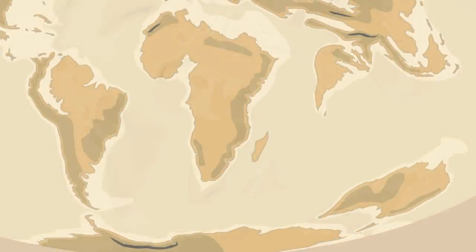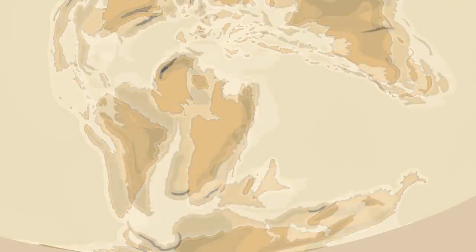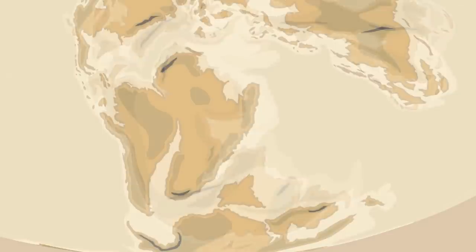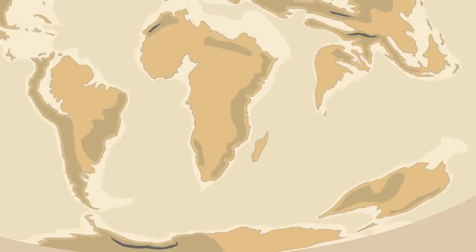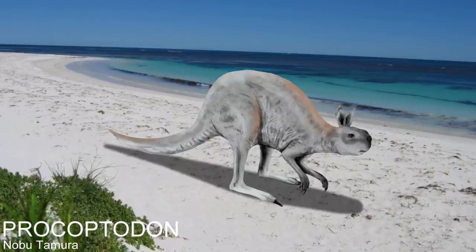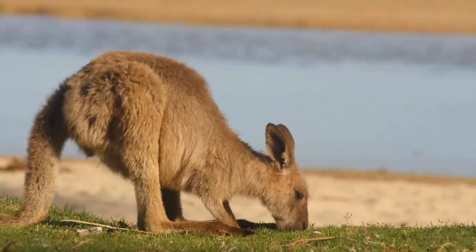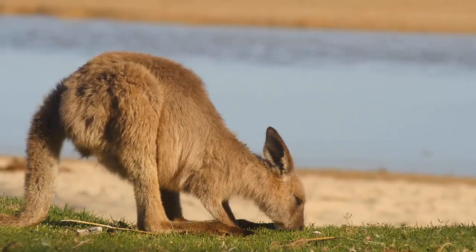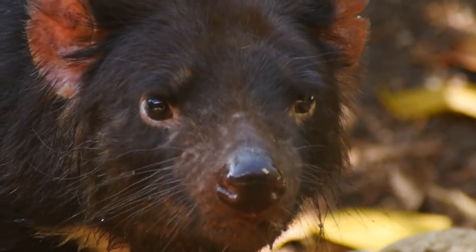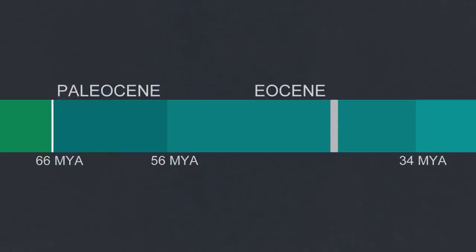Once upon a time, all of these continents made up a large southern continent named Gondwana. Although after the extinction of the dinosaurs this continent had long since broken apart, all of the continents were much closer than they are now, making it possible for animals to cross between them. Most genetic evidence suggests the diverse array of marsupials filling many niches across Australia all descended from one migration event, arriving about 45 to 50 million years ago.